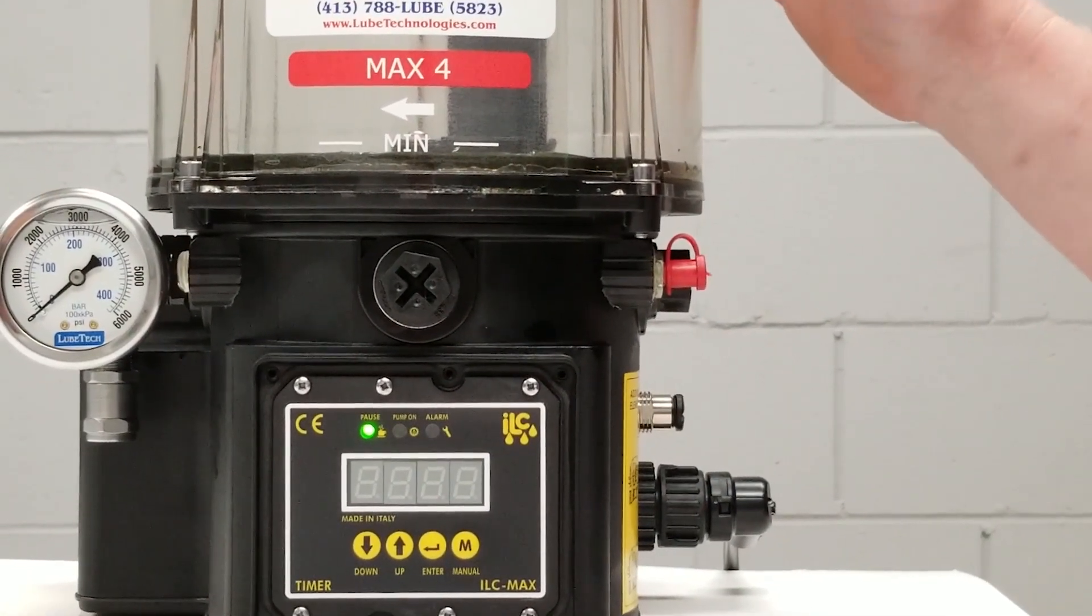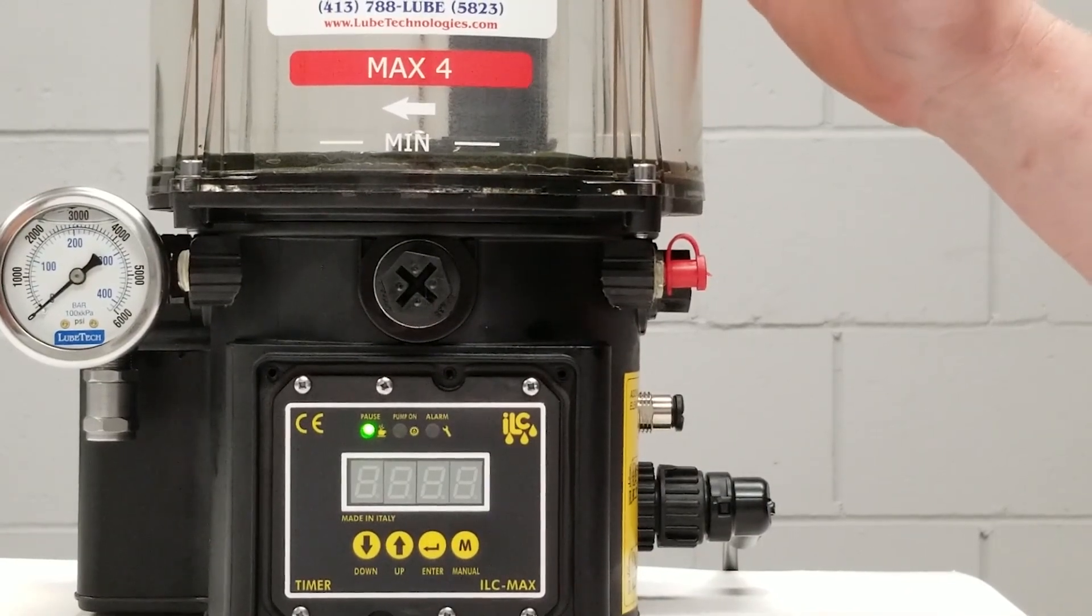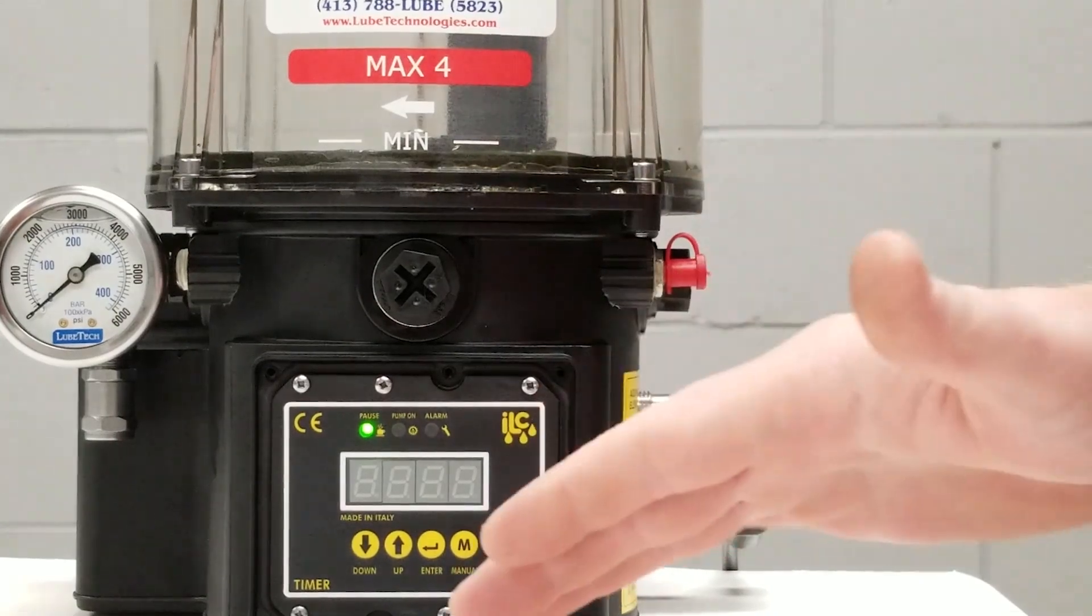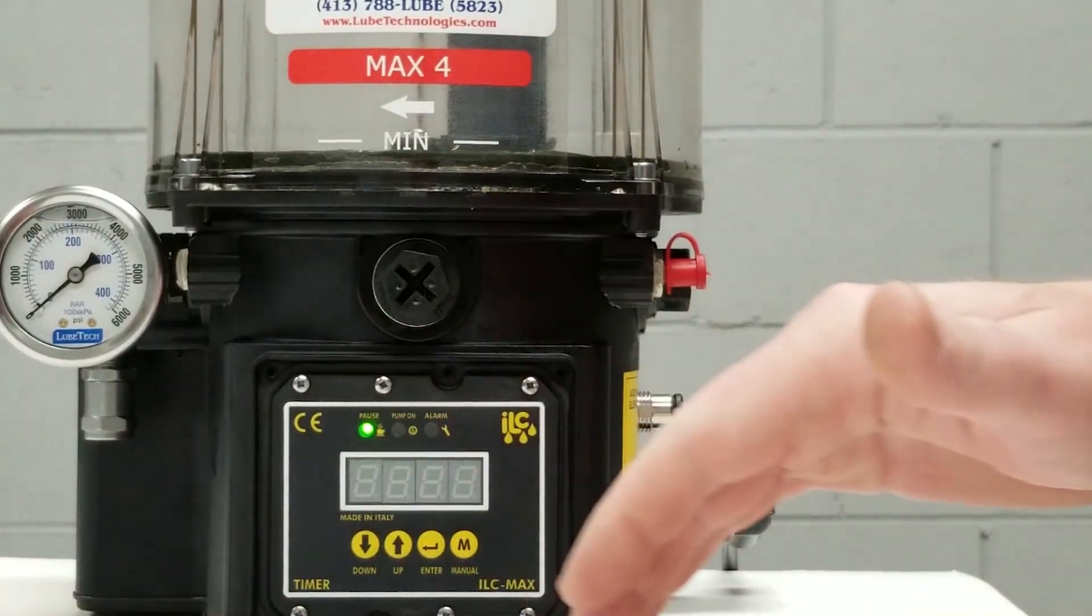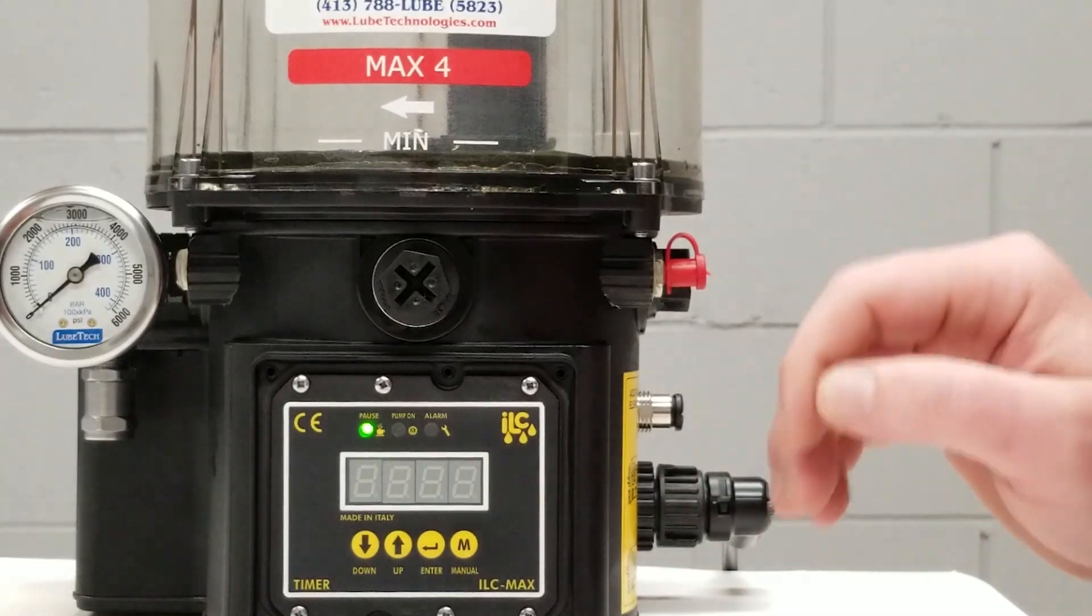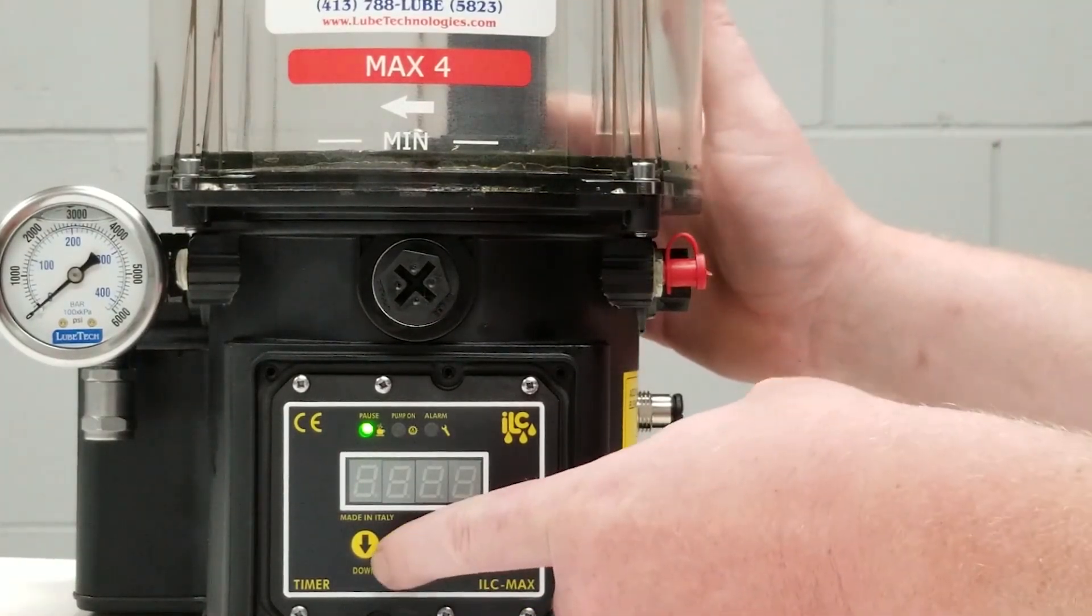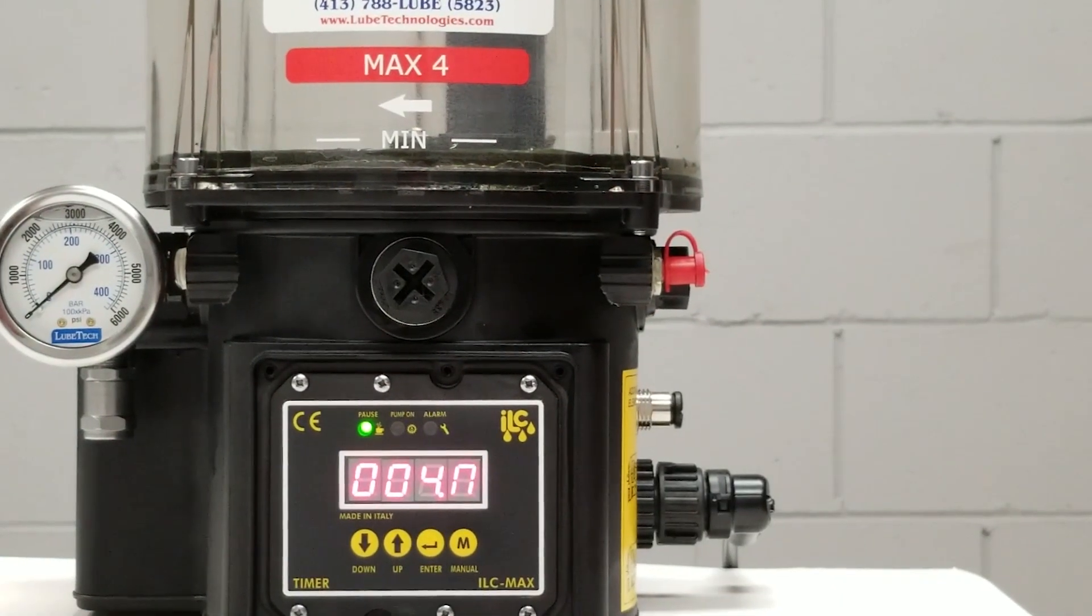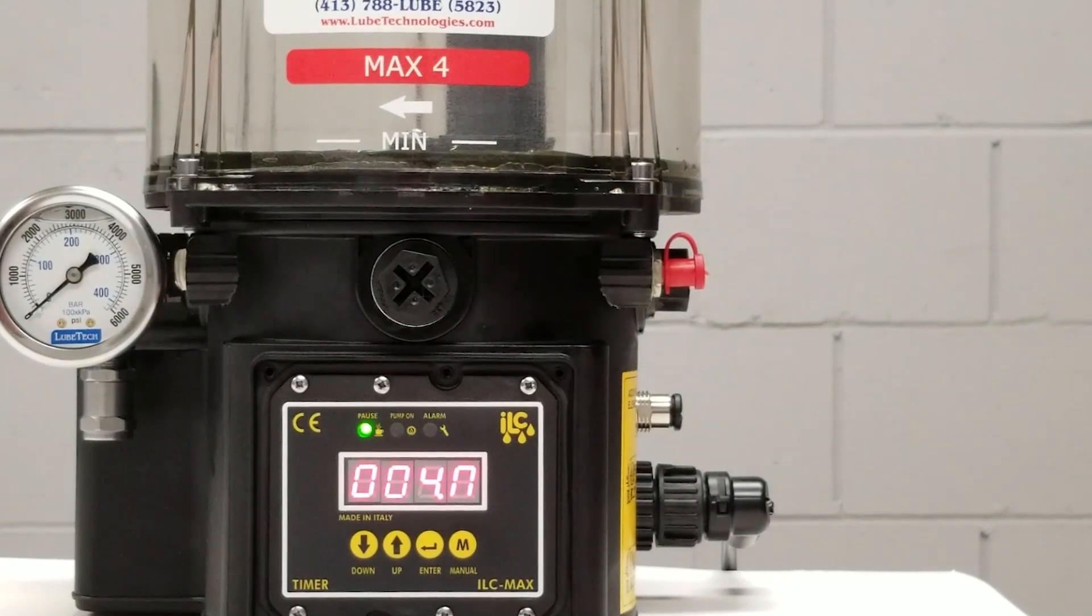To get into the programming mode, we have to have the ignition on, which means we need to have power to the pump. You would know if you have power by seeing the LED status—one of them should be on. If your screen is blank and you want to know where we're at, we simply press the up arrow key and this will make our screen illuminate. This tells us that I have four minutes left in my delay time until this pump comes on and runs again.